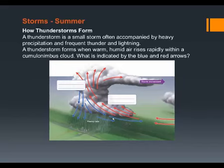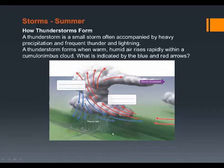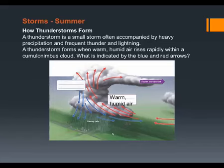Thunderstorms form when a small storm, usually accompanied with heavy precipitation and thunder and lightning, has warm humid air rising and then cool air sinking. This all occurs inside of a cumulonimbus cloud. As warm humid air rises, what happens to that air? It gets colder.